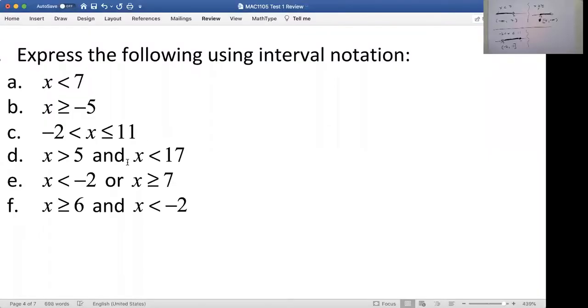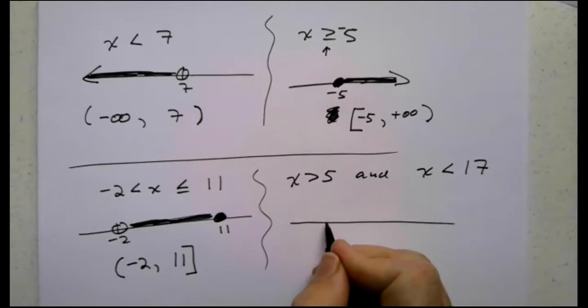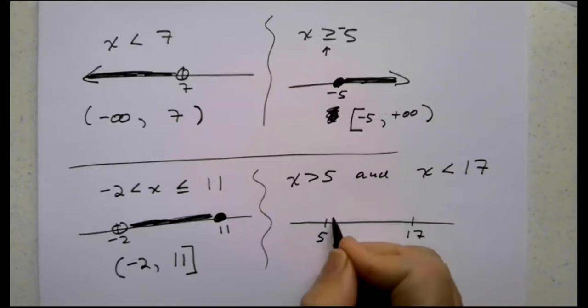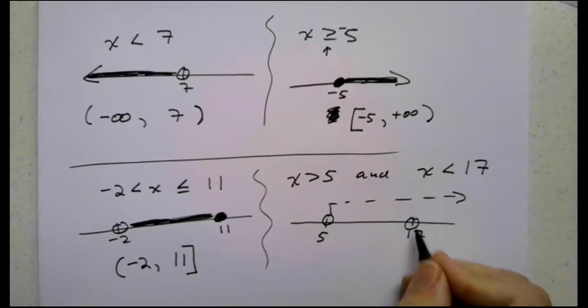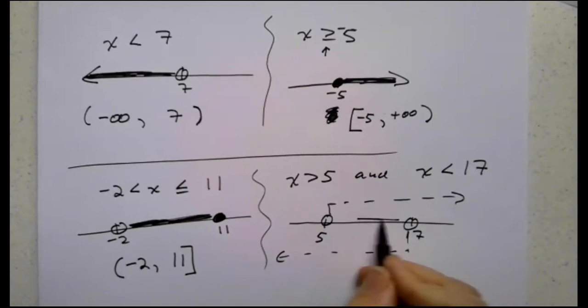Next up I have x is greater than 5 and x is less than 17. So where are they both true at the same time? Greater than 5. So here's what I like to think about this. Here's 5. Here's 17. Make sure you put 5 on the left and 17 on the right. Greater than 5, so we go this way. Greater than 5. Less than 17, so we go that way. And where are they both true? Where are both true simultaneously? In the middle.